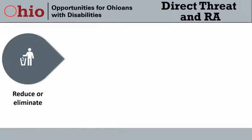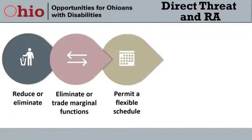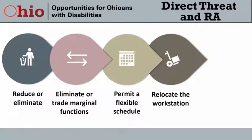Examples of reasonable accommodations for direct threat situations may include restructuring a job to eliminate or trade the marginal functions, permitting a flexible schedule so the employee works when fewer employees are in the work environment, or relocating the workstation away from a high-traffic area to increase distance from others. If none of those or other on-site accommodations are sufficient, the employer would consider other types of reasonable accommodations such as leave, telework, and reassignment.